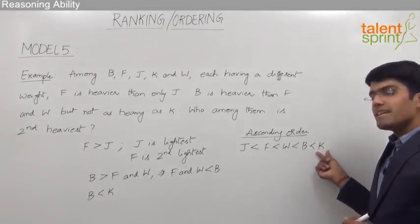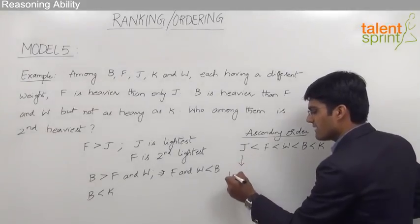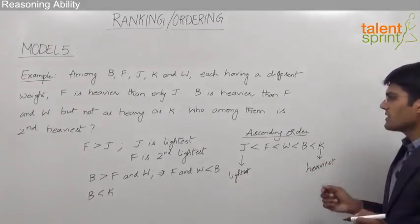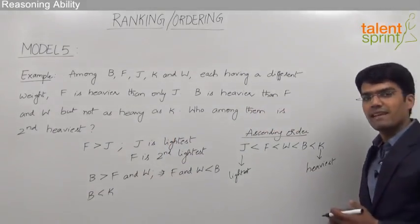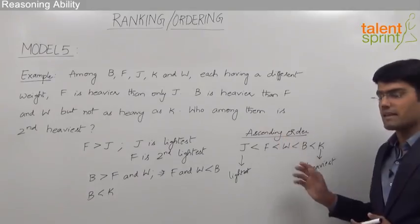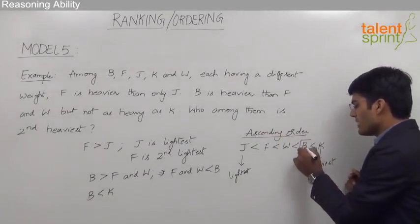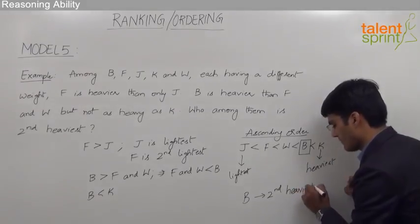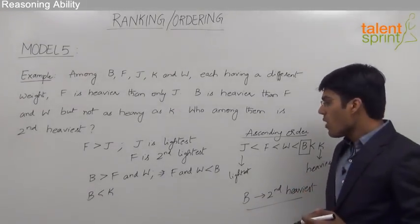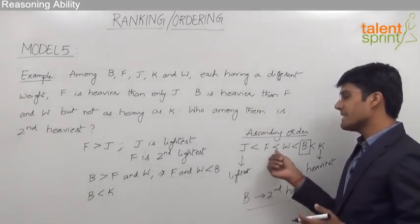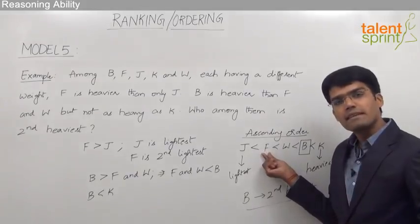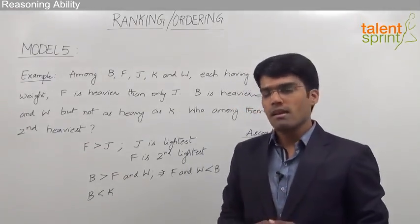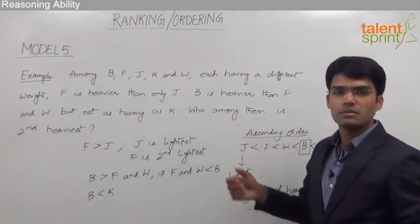So the complete ascending order by weight is J, F, W, B, K. J is the lightest person and K is the heaviest. The question asks who is the second heaviest — coming from the heaviest side, the second heaviest person is B. Similarly, if asked who is the second lightest, coming from the lighter side, the answer is F. This is how we solve ordering questions by forming an ascending or descending order of the given group of persons.